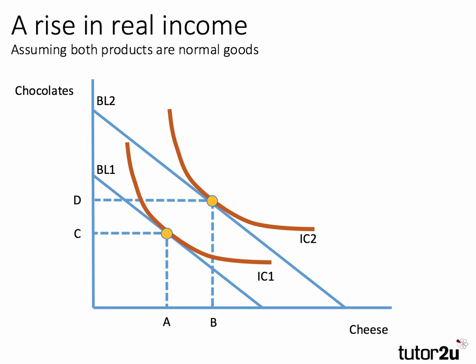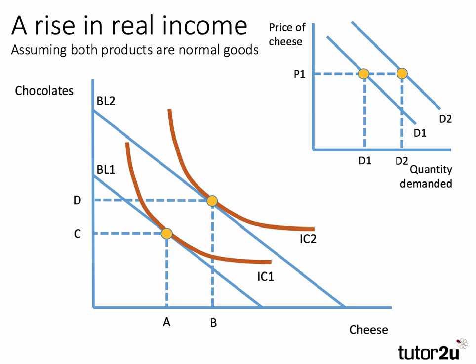We can translate this indifference curve analysis into the demand curve. Taking the demand curve for cheese in isolation — we held the price of cheese constant, but as a result of the increase in income, consumers are now buying a greater quantity at the equilibrium point. Therefore, the demand curve for cheese has shifted outward due to the increase in income. Of course, the higher the income elasticity of demand, the greater will be that shift in the position of the demand curve.